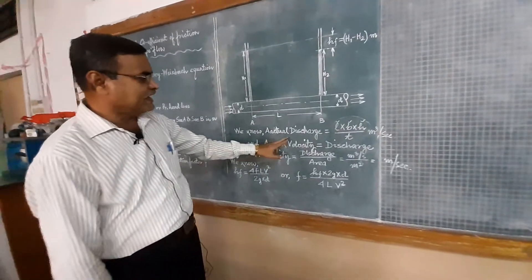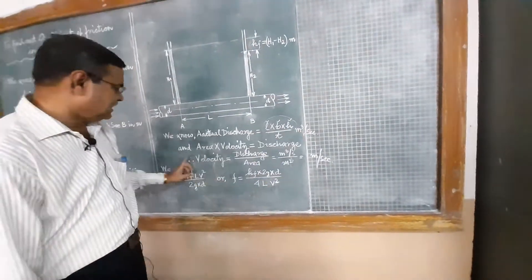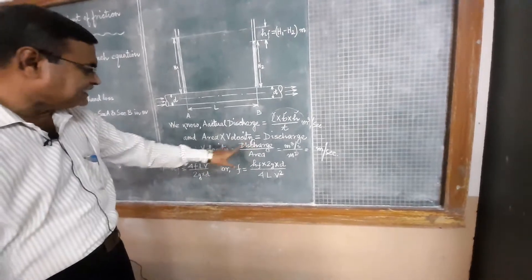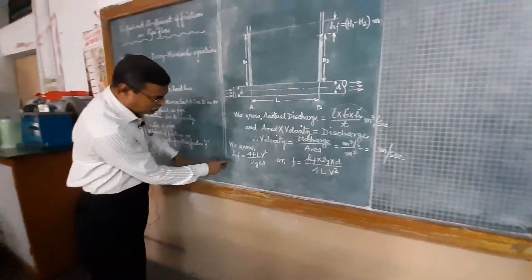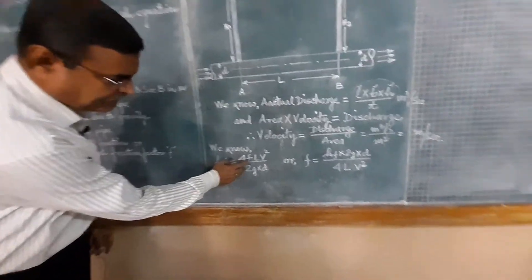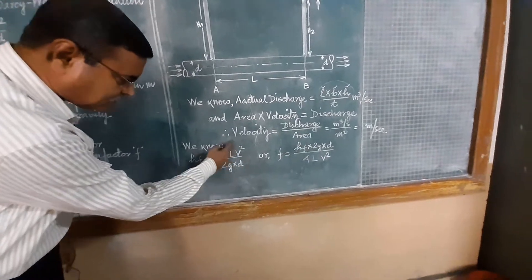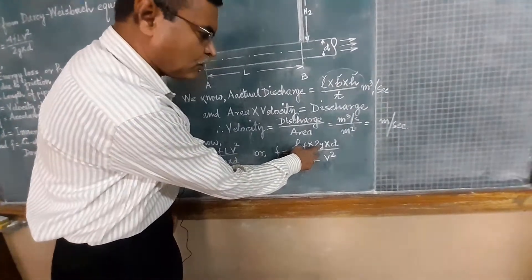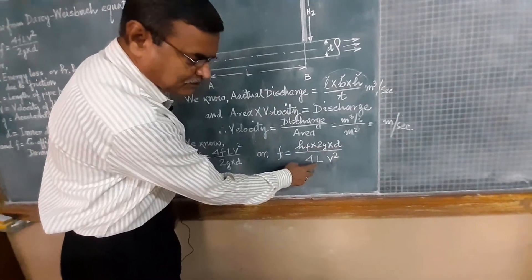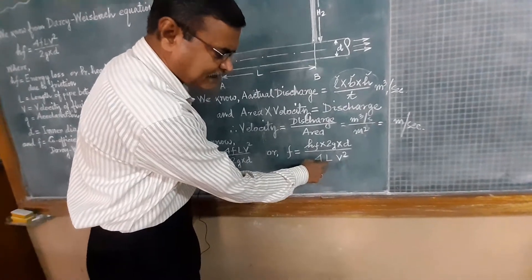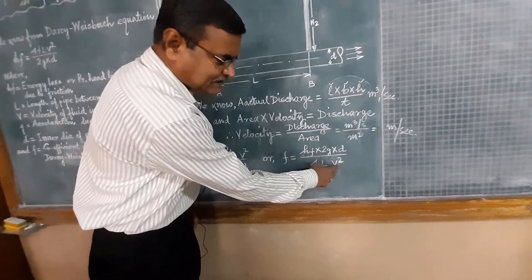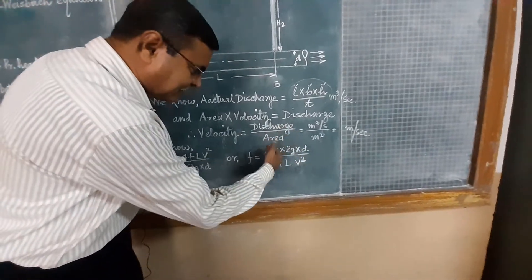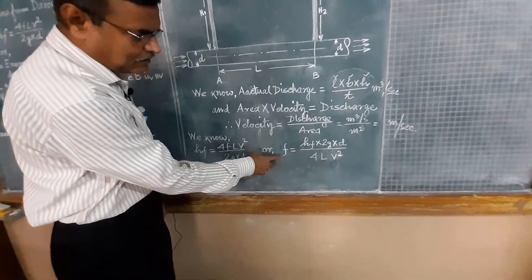Now, the actual discharge is calculated from the known formula, and velocity is equal to discharge divided by area. We know the formula: hf = 4fLv² / (2g × d). We get the hf value from the differential manometer, g is already known, d is the diameter of the pipe, L is the length between the two taps at the entry and exit sections, and v is the velocity of flow already calculated. So it is very easy to get the value of f.